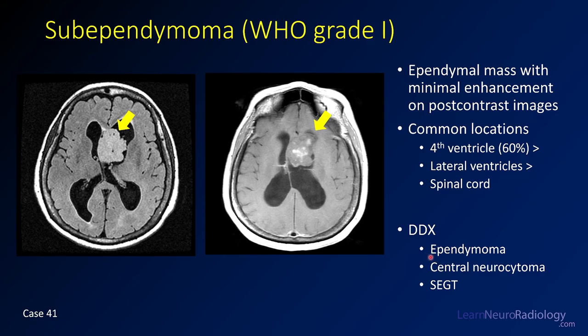Most ependymomas enhance more avidly. Central neurocytomas as well. Subependymal giant cell tumors are those associated with tuberous sclerosis — they can have a similar appearance, but they also tend to enhance a little bit more. Non-enhancing intraventricular mass: probably subependymoma.